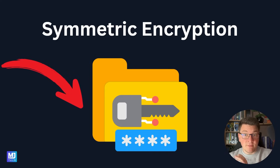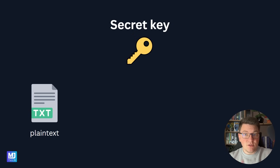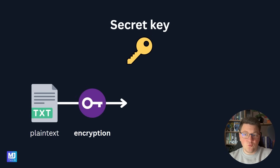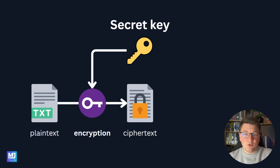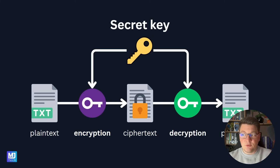In this video I want to focus on symmetric encryption, which uses a secret key for both the encryption and decryption process. We start with a plain text and feed the secret key into the encryption algorithm, which produces the ciphertext — the encrypted version of our plain text. We can also do the reverse: take the ciphertext, provide the secret key to the decryption algorithm, and it produces the same plain text we started with. This is what I want to demonstrate using simple C#.